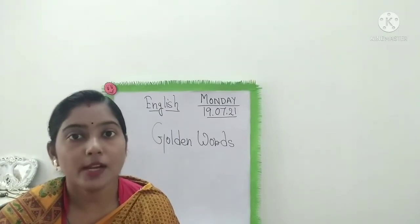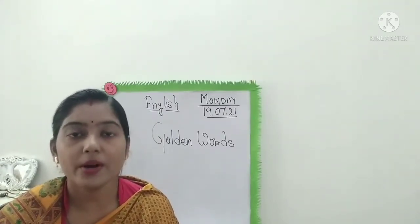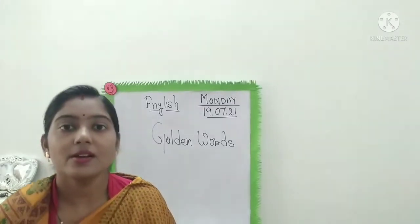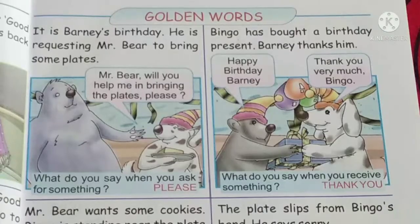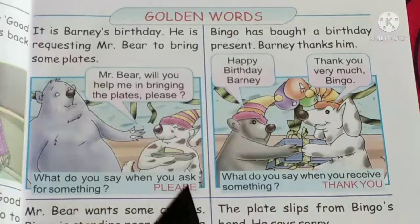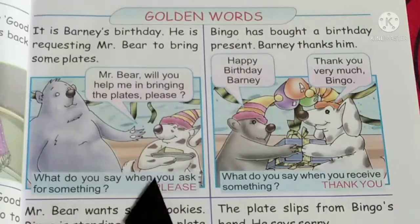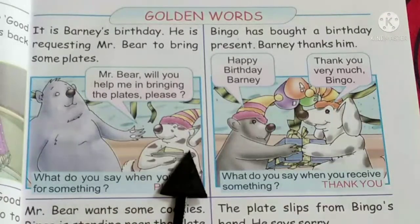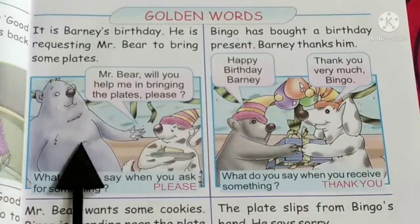Through our story we will learn these golden words from our English book. Everyone take your English book and open page number 5. So children, we will learn about golden words through this story. I will read the story for you and you all will listen very carefully. Look at the picture — his name is Bernie and his name is Bingo.